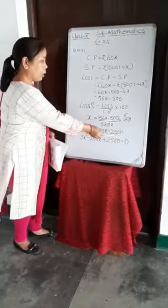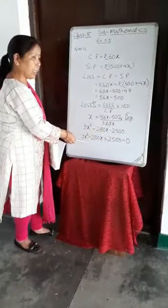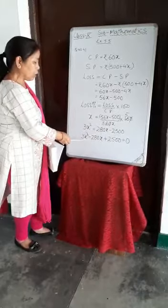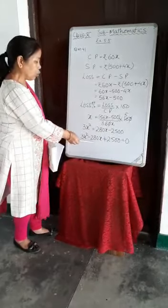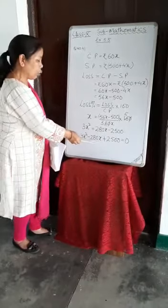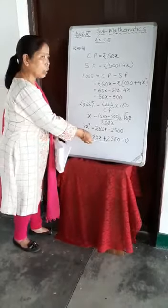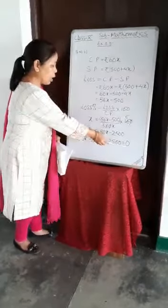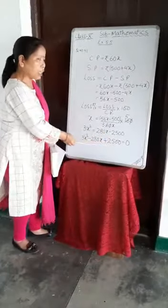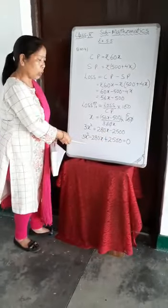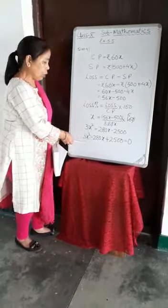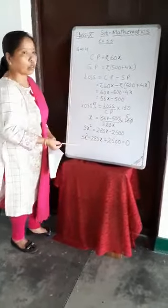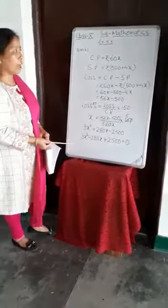Bringing all terms to one side: 3X squared minus 280X plus 2500 equals 0. This has become a quadratic equation. You can solve the quadratic equation to get the value of X.